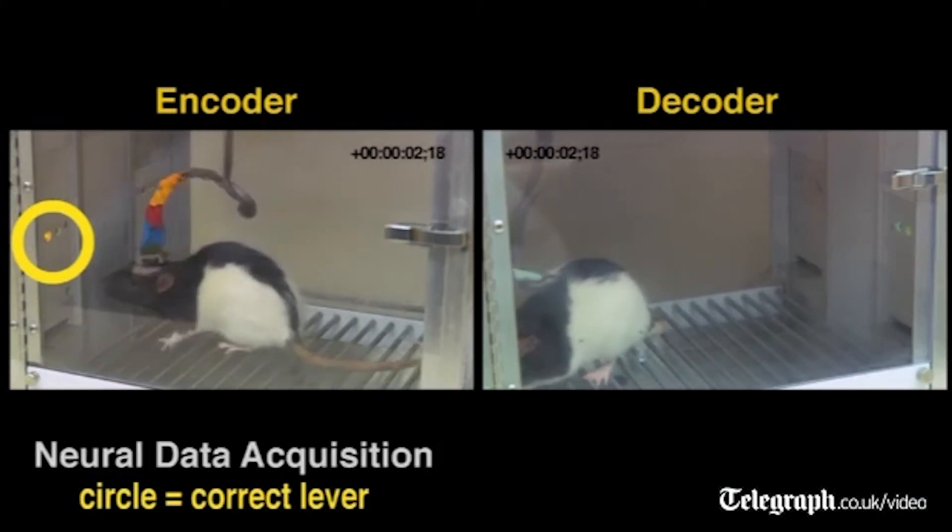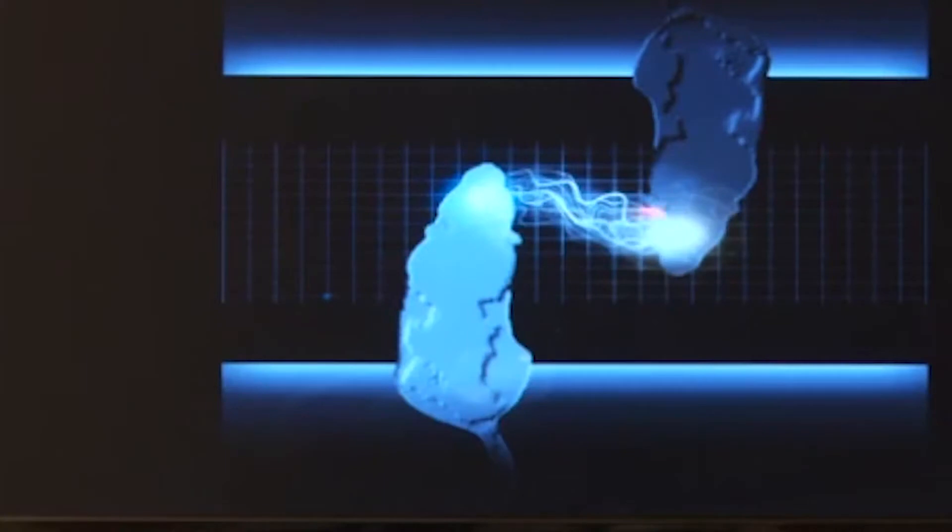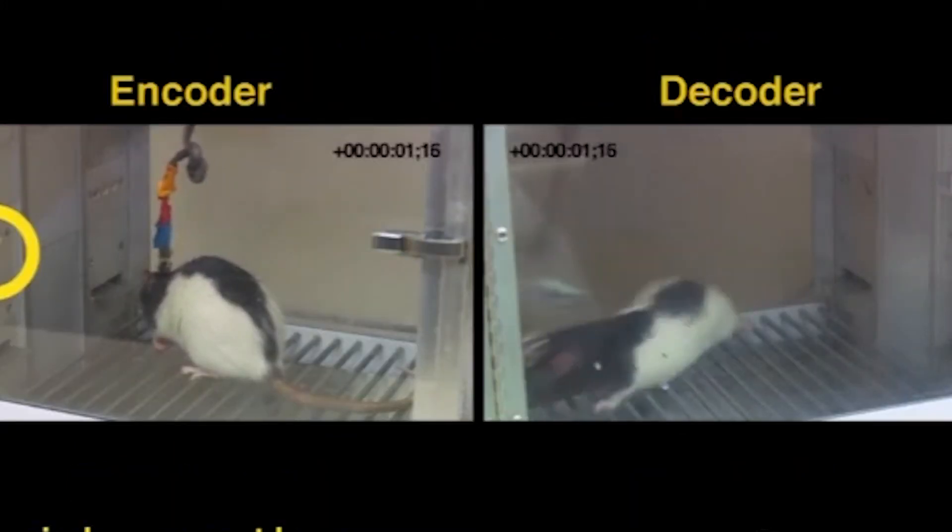Number 4: Telepathy. In an experiment conducted by a scientist from Duke University with the help of scientists in the International Institute of Neuroscience of Natal, Brazil, two rats thousands of miles apart were made to telepathically communicate with each other, paving the way for similar technology for humans in the near future.